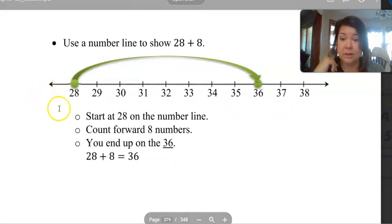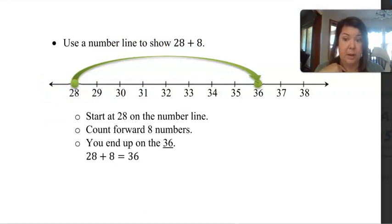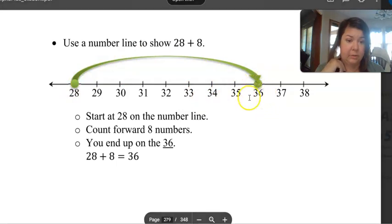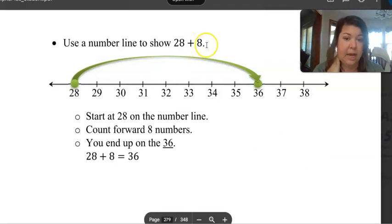So it says show twenty-eight plus eight. So you start at twenty-eight and then you move it up eight: one, two, three, four, five, six, seven, eight. So twenty-eight plus eight equals what number is that? Thirty-six. So you just count forward eight numbers because we're adding eight.